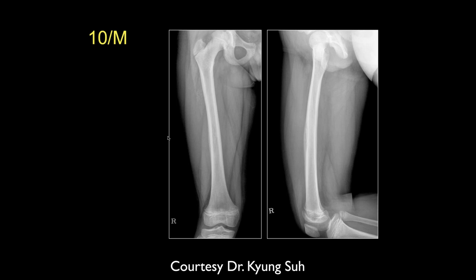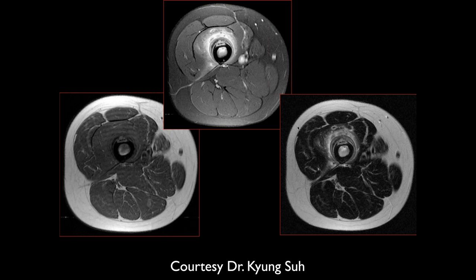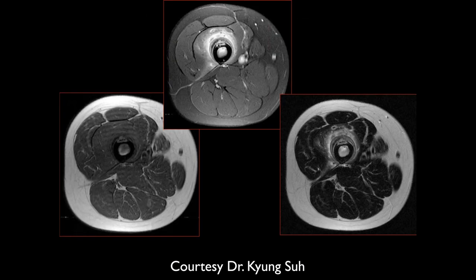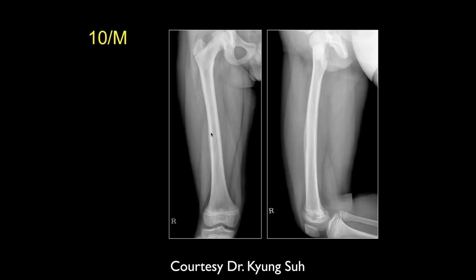A 10-year-old male shows minimal periosteal reaction along the anterior-lateral aspect of the right femur mid-diaphysis on X-ray — described as an onion-skin pattern. On MRI, diffuse periosteal reaction is more easily visible, especially anteriorly, with a small sequestrum. This is concerning for osteomyelitis. However, malignant neoplasms such as osteosarcoma can have a similar periosteal reaction pattern.